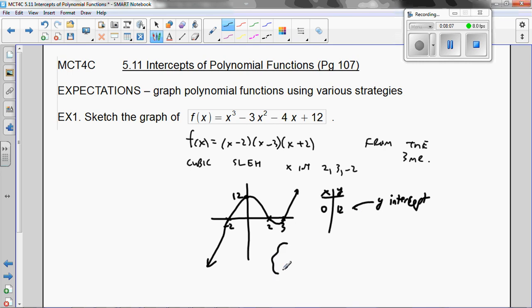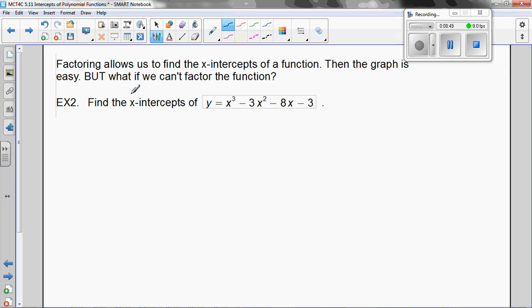And that's the graph. Notice that if we wanted to, we could use the TI-83 to find the maximum minimums if we wanted to know everything about this. So I'm going to say, and we covered that this unit, we could use the TI-83 to find the max and min points. I'm not going to because we've practiced that quite a bit, and it never asked us to. It asked us just to sketch the graph, and there's a sketch of the graph, and actually it's pretty darn good. Alright. What's next? It says, factoring allows us to find the x-intercepts of a function. Then the graph is easy. But what happens if we can't factor this function?